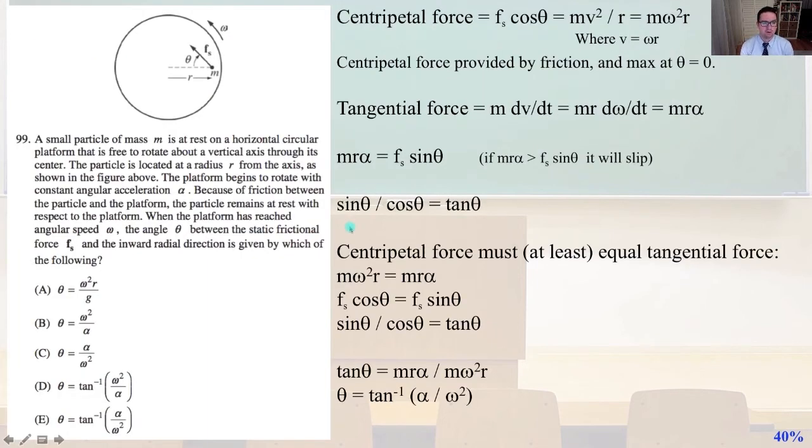Number 99, a small particle of mass M is at rest on a horizontal circular platform that is free to rotate about a vertical axis through its center. The particle is located at a radius r from the axis, as shown in the figure above. The platform begins to rotate with constant angular acceleration, alpha. Because of friction between the particle and the platform, the particle remains at rest with respect to the platform. When the platform has reached angular speed, W, the angle, theta, between the static frictional force, F_s, and the inward radial direction is given by which of the following?